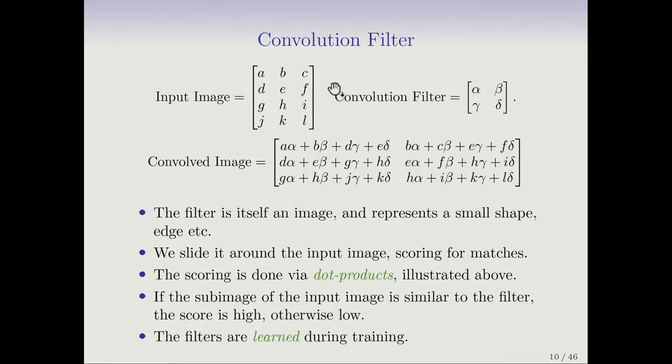We're showing you, using little matrices, how a convolution filter works. Let's suppose your input image was this one, with pixels represented as letters. The convolution filter is itself a little image, and it's small. Here we've shown a convolution filter which is just two by two, so it's just four numbers arranged in a two by two array.